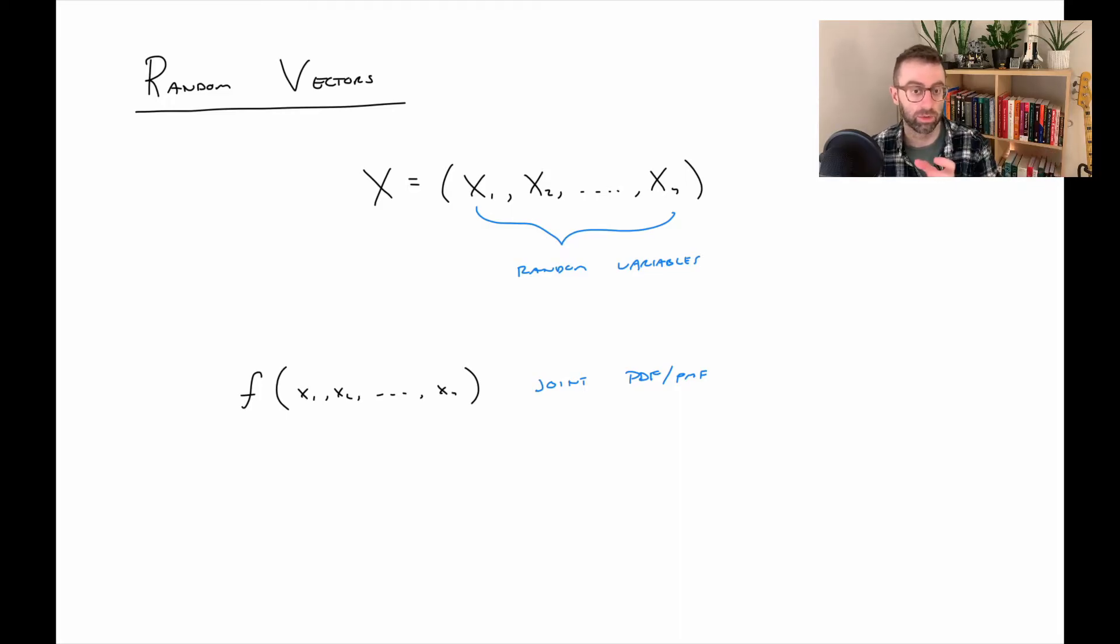And then again, you could do conditioning and marginalization. So you could find the marginal distribution of any one of these random variables, but you'd have to integrate out all the other ones, or you can condition on some set of them and talk about how the remainder vary conditioned on that. But the same ideas extend to working with bigger collections of random variables.